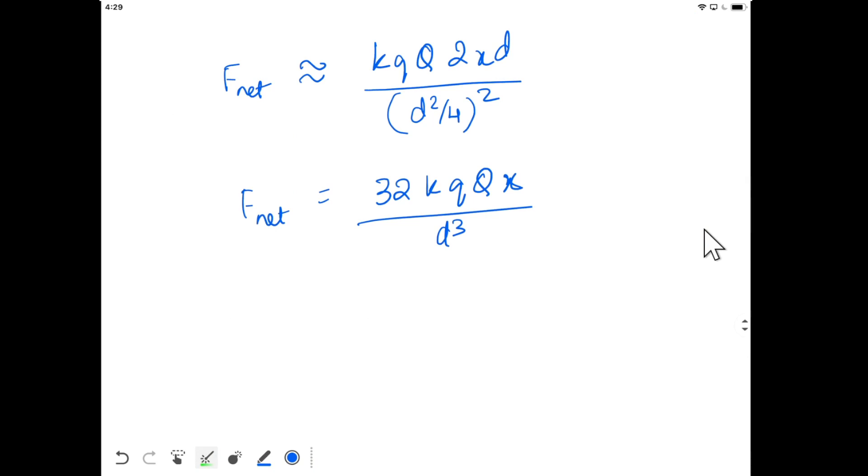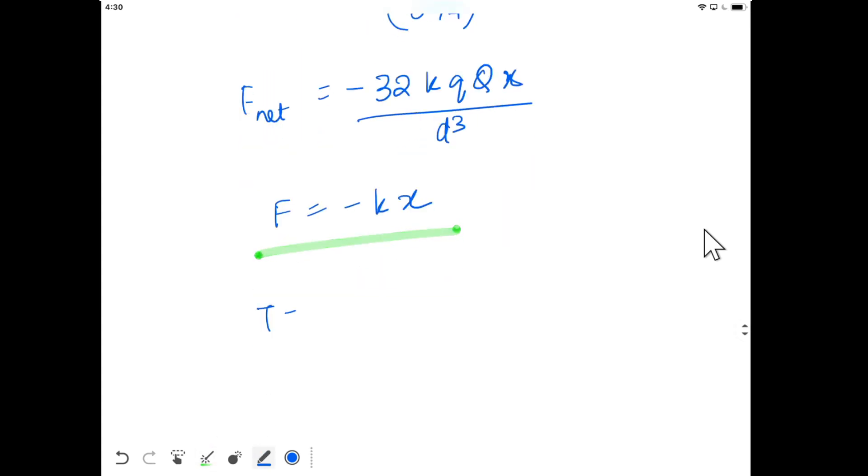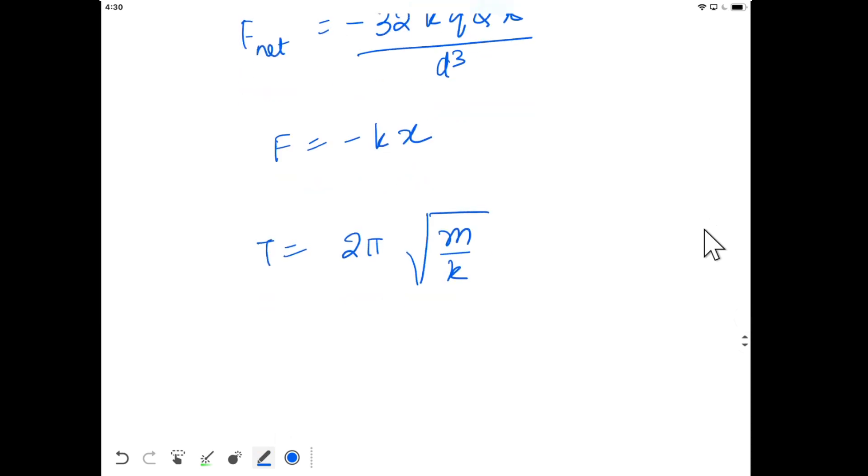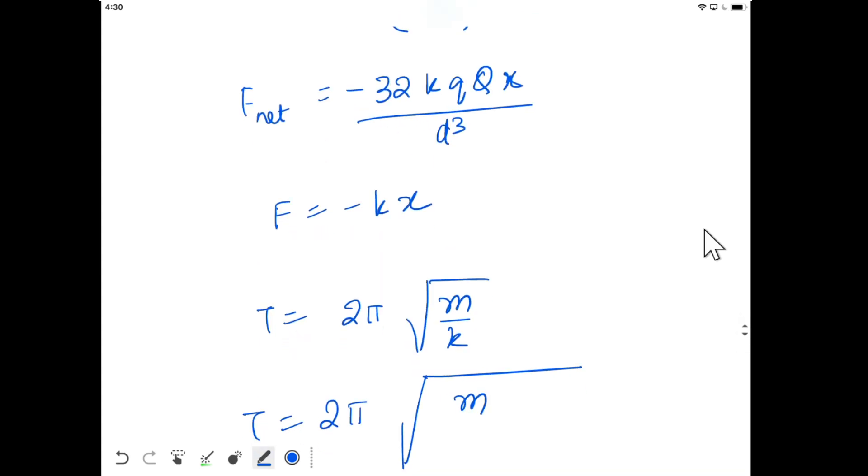If I take the sign into consideration, force is acting opposite to x, so I can write F = -kx, similar to a spring constant. That means the system will perform SHM. The time period of SHM is 2π√(m/k), so we will get time period equal to 2π√(m/k).